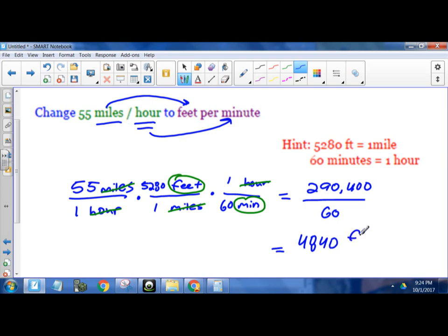And the units here would be feet per minute. So that is the equivalence here, is that 55 miles per hour is equal to 4840 feet per minute.